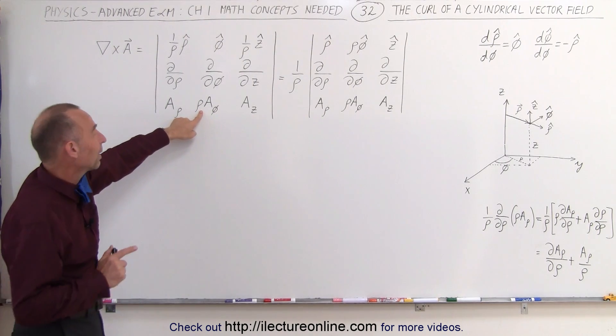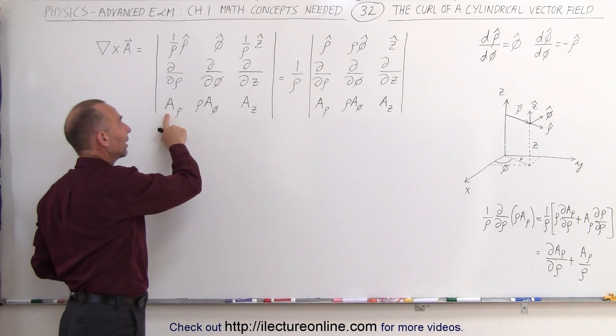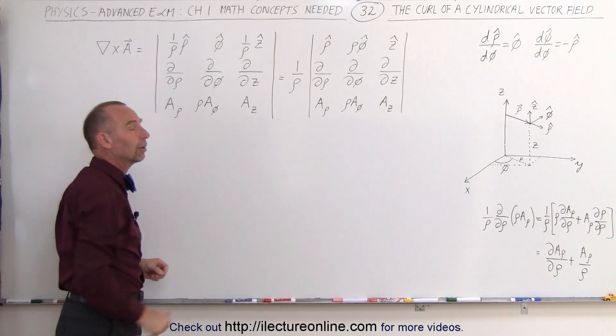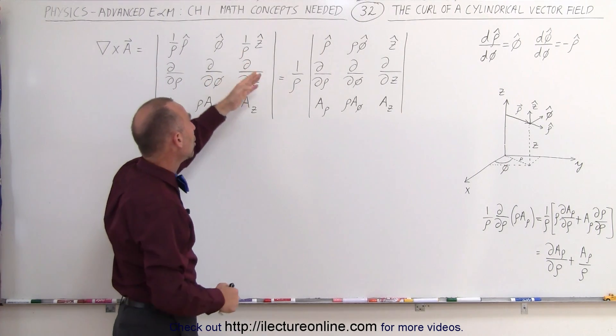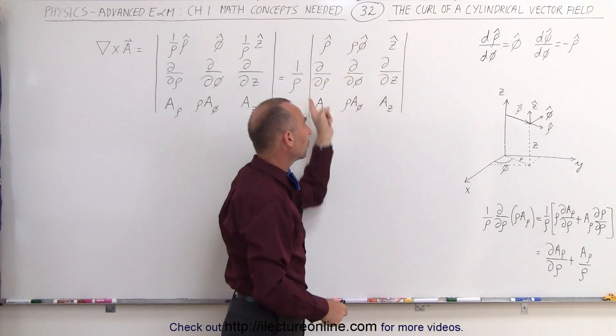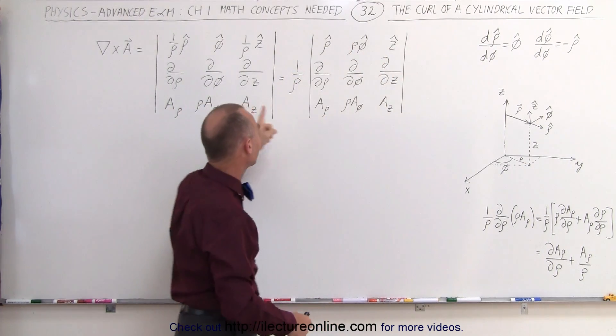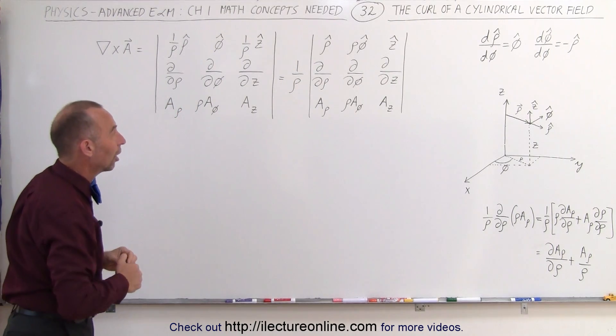Notice we also must multiply this by row, otherwise we don't have the correct units. This is a unit of length, length, and we have to have a row there to have it in units of length. Now notice what we can do for the top row. We can factor out a 1 over row and write it like this instead, and you'll probably see it written like this more often than you'll see it written like this, but either way, you can see that both are the same.